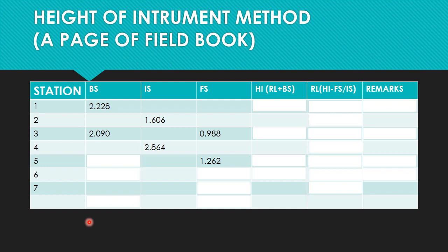After that, the next reading taken is back sight, that is 0.602. The next reading is foresight, that is 1.982. After that, the next reading will be our back sight, and the last reading will be our foresight. In the next step we are going to find out the reduced level and the height of the instrument.